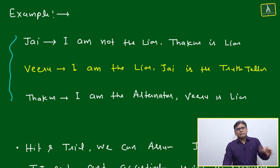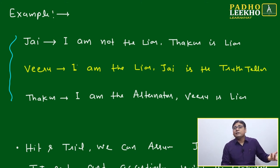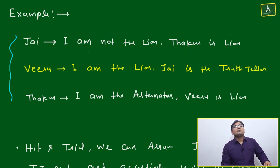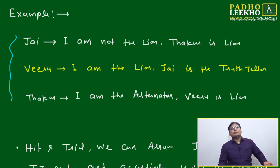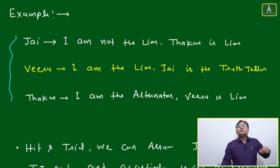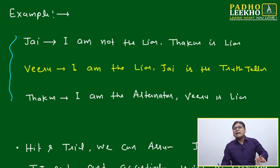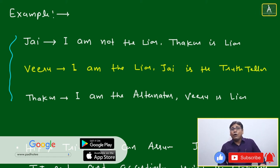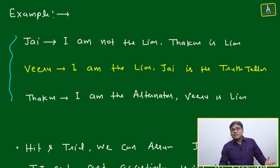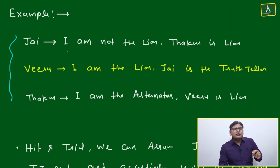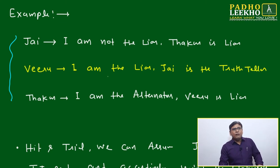Somebody will be the truth teller, somebody the liar, and somebody the alternator — but how do we decide? Nothing in the question tells us which statement is true or false, or who is what type. We have to start from some point using hit-and-trial — take any person's first statement and assume it is true.